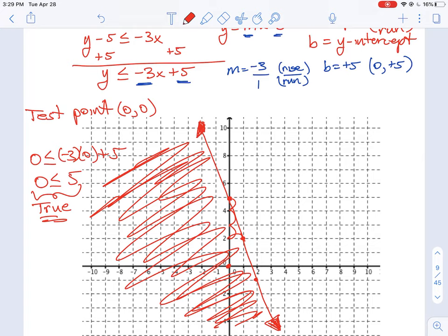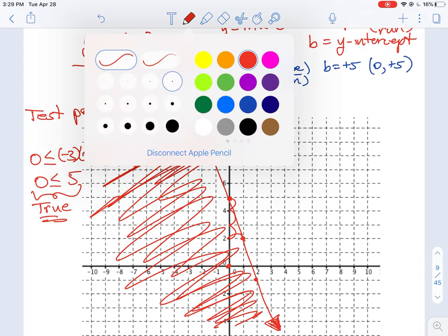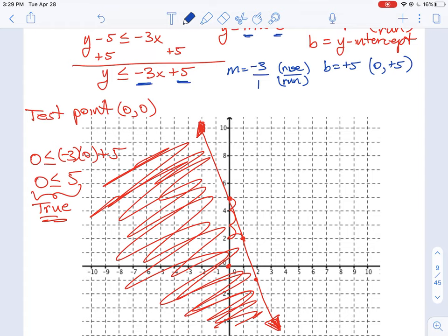If our test point was false, then that means we wouldn't be shading that part that contains the point. We would have to be shading the opposite side of the line, and you could pick another test point there. And in fact, we can kind of do that right here. So I'm going to pick another test point. Let's just pick a real easy number. You don't have to pick anything that's hard. I'm going to do this one in blue. We'll do a test point here where we have two comma two.